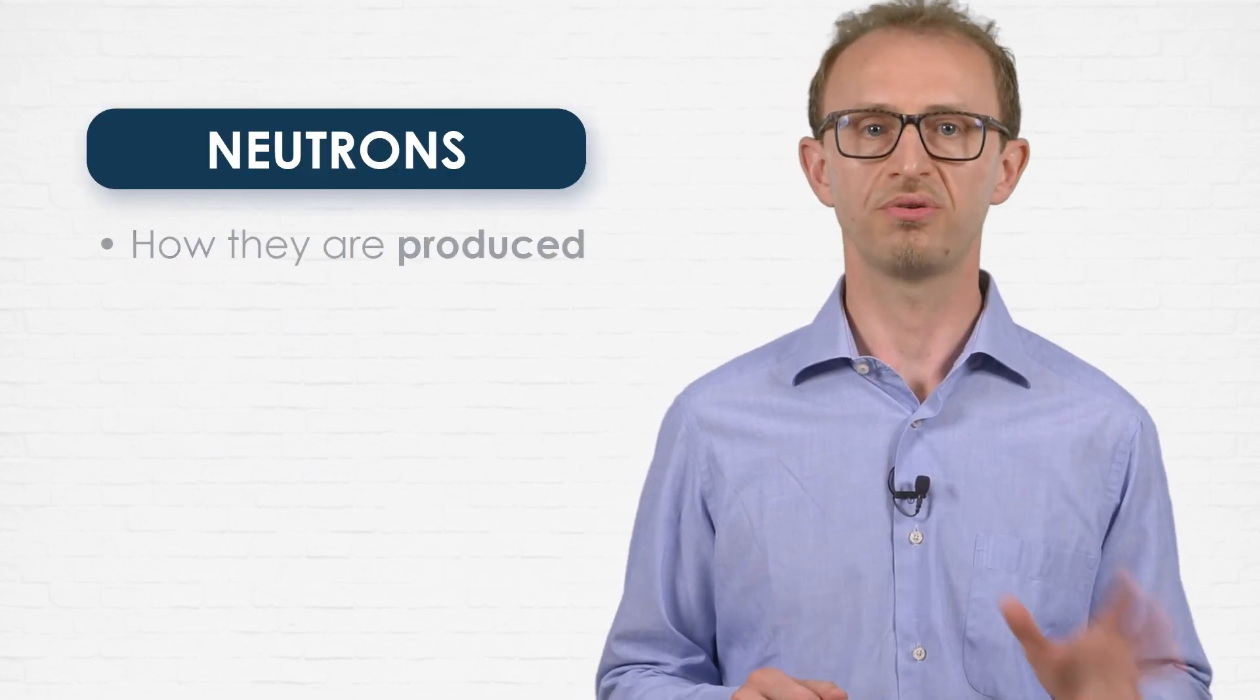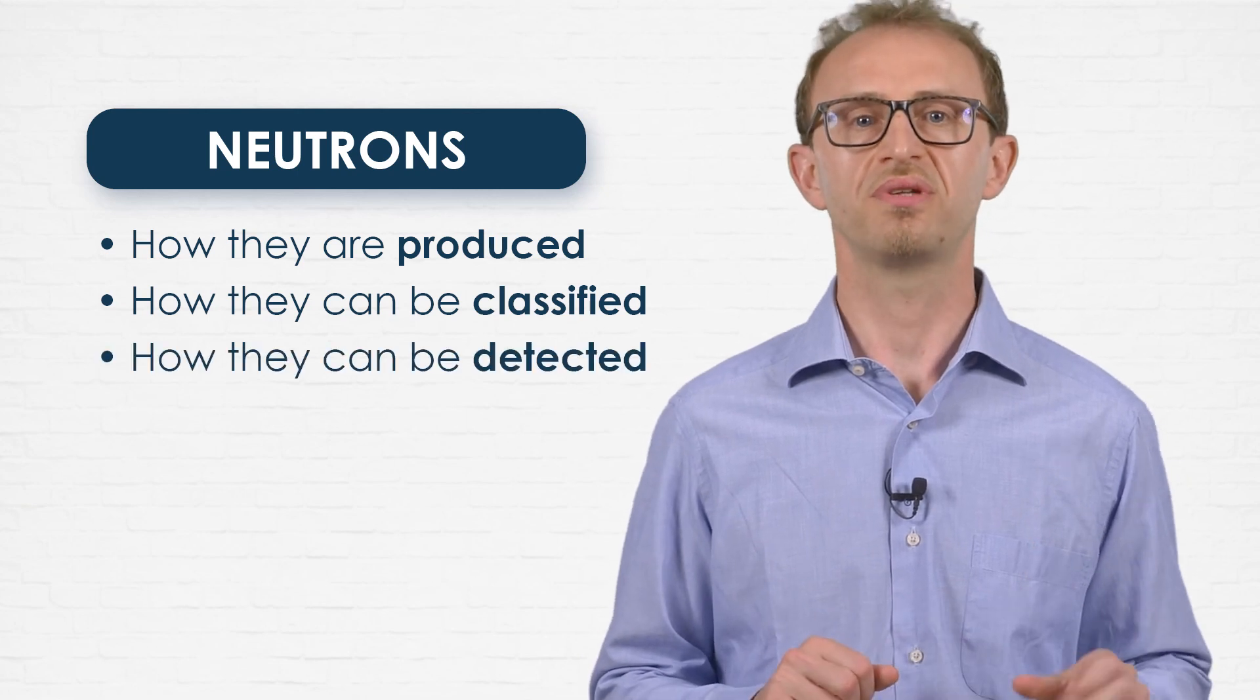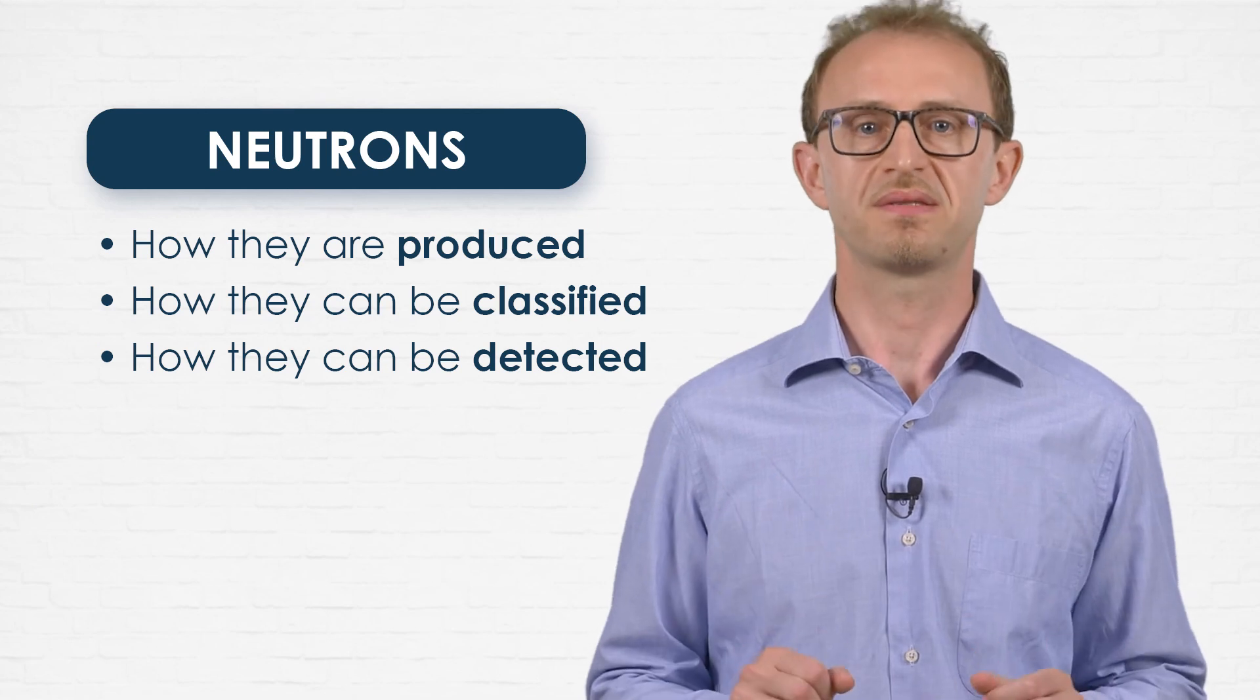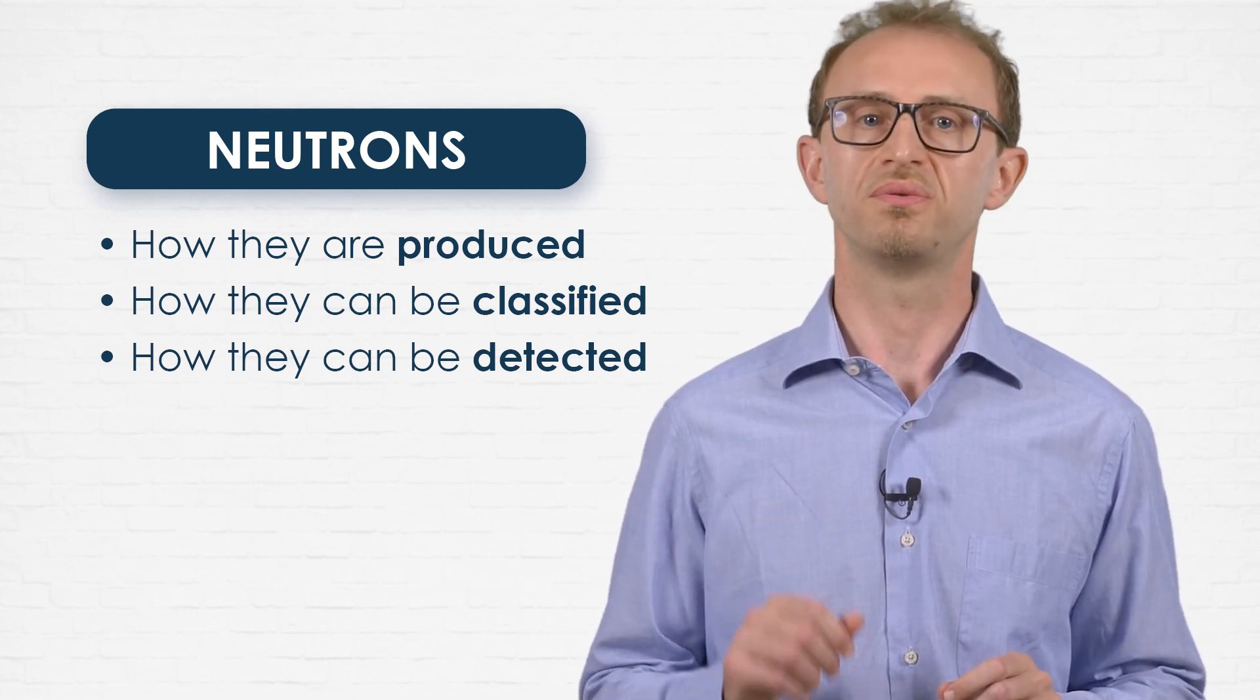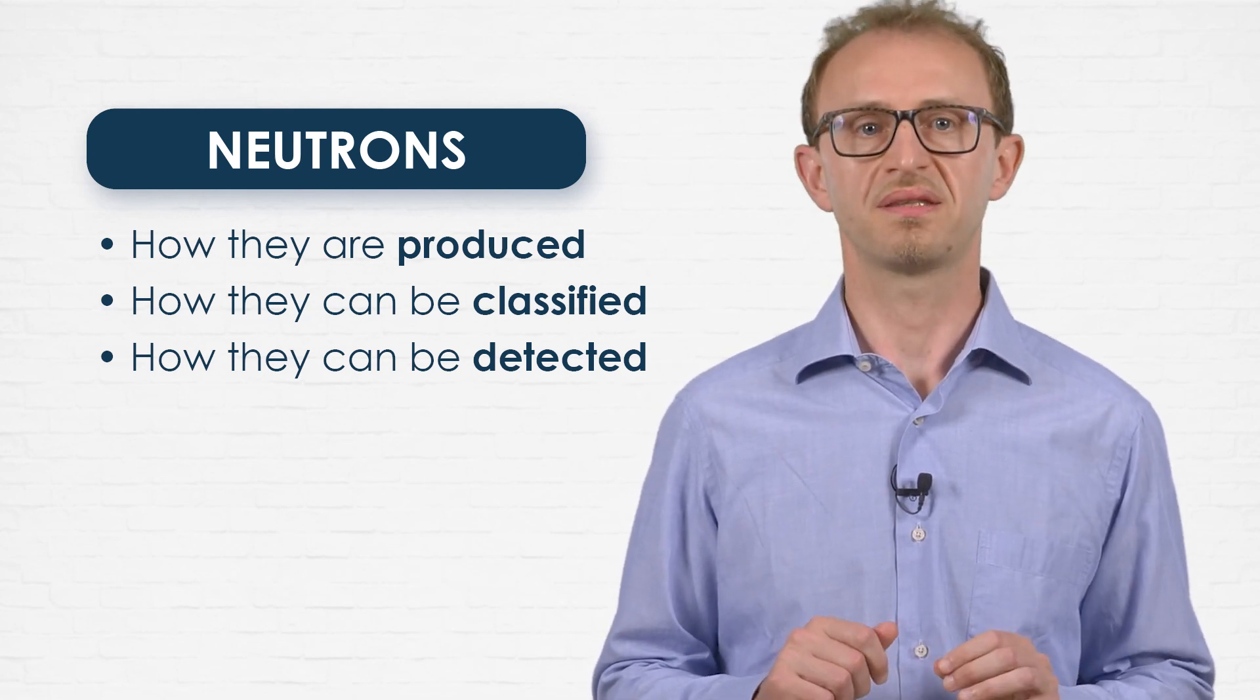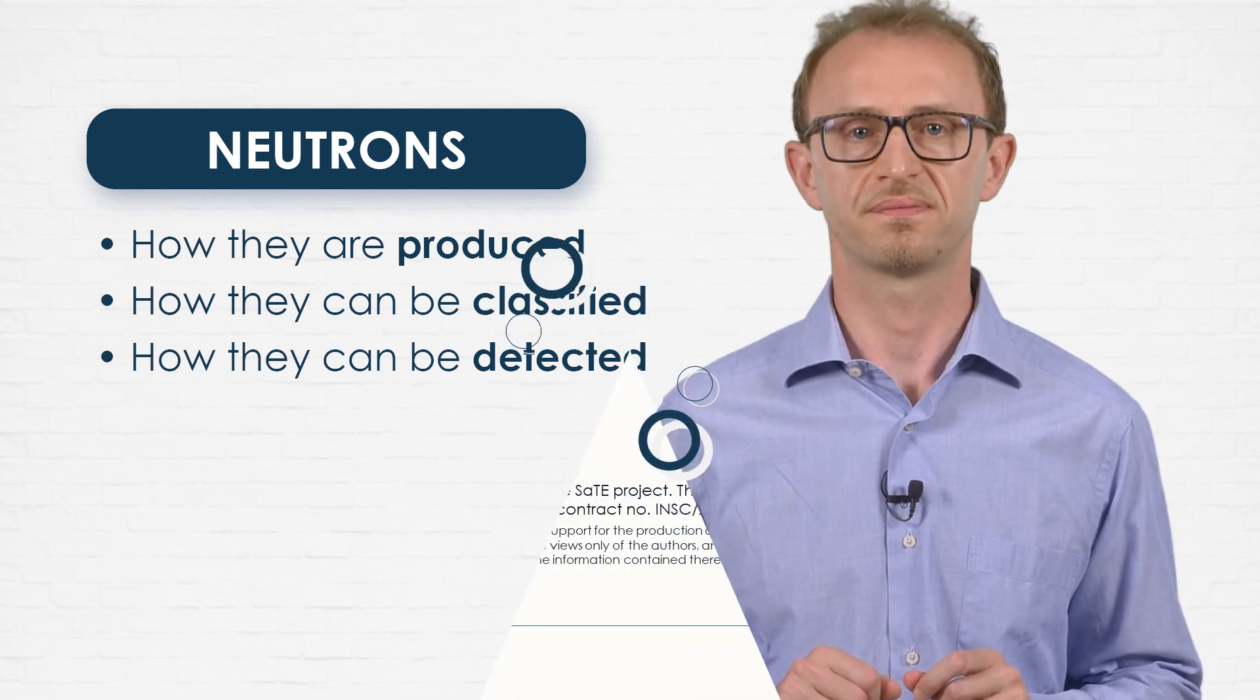So, to wrap up, we talked about neutrons: how they are produced, how they can be classified, and how they can be detected. Each one of these aspects results to be strongly related to the physics of nuclear processes. Physics that can be exploited to manage neutron fields.